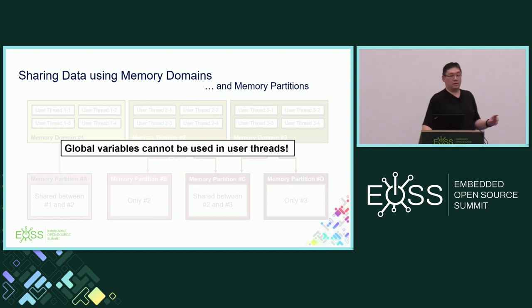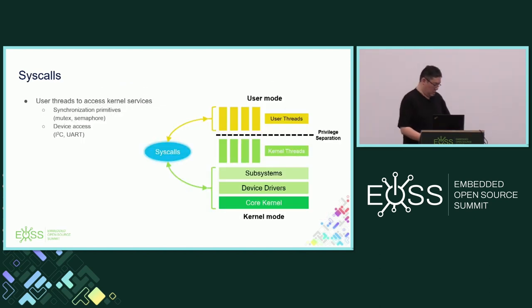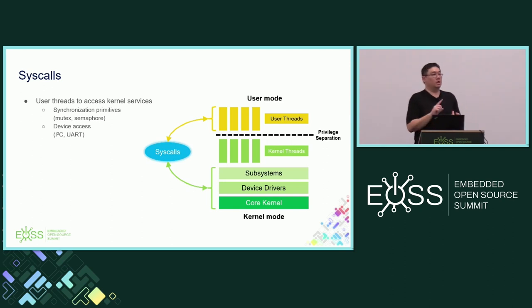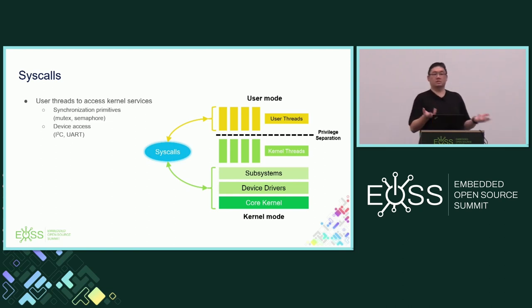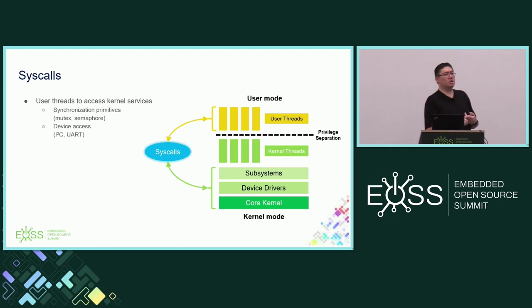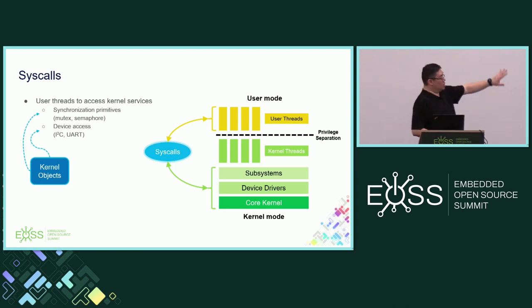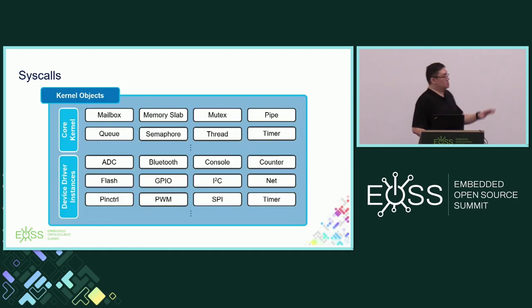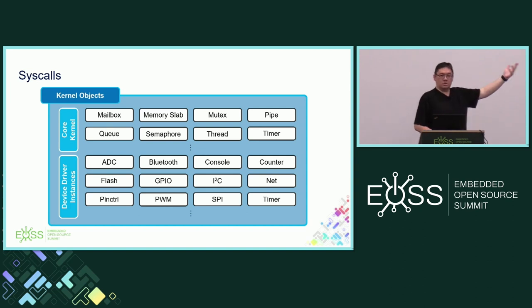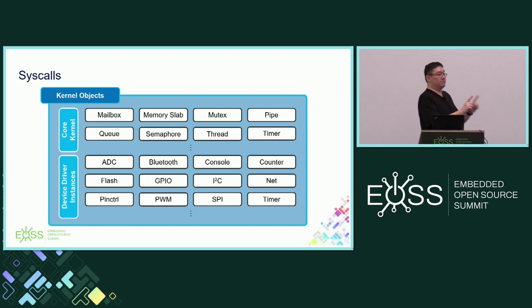The next topic is syscalls. The main purpose of syscalls is for user threads to access kernel services — for example, locking a mutex, unlocking a mutex, taking or giving a semaphore, sending something to a mailbox. Also for accessing devices like doing an I2C transaction or sending something to a UART. In Zephyr we call these kernel objects. Common kernel objects include mailbox, memory slab, mutex, and so on. For device drivers, each kernel object is not the driver itself but each device driver instance — so if you have three I2C controllers enabled, you have three I2C kernel objects.